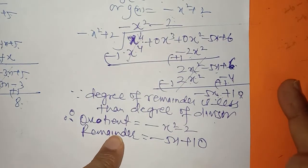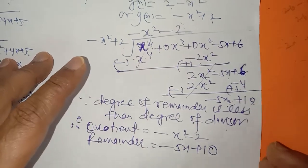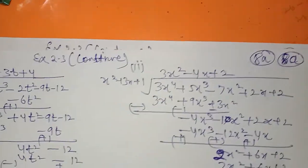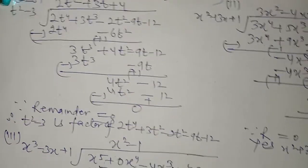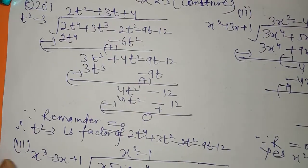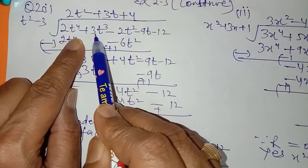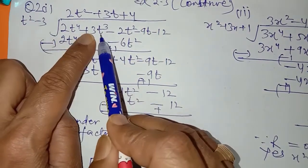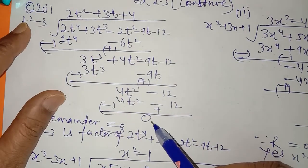So it is simple division — only simple polynomial division — and you have been doing this division from Class 8th and also in Class 9th, still we are discussing it. In the next part of this question, again you have to divide and find whether the given polynomial is a factor or not. For the factor, I have already told you — if the remainder comes zero, then we will say that it is a factor.